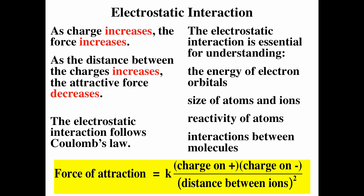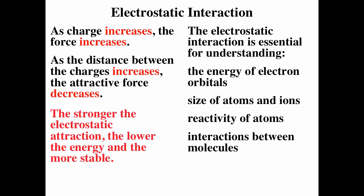The electrostatic interaction is essential for understanding the energy of electron orbitals, the size of atoms and ions, reactivity of atoms, and interactions between molecules. A lot of chemistry is just about the electrostatic interaction. The stronger the electrostatic attraction, the lower the energy, the more stable. Opposite charged particles attract; stronger attraction means lower energy and more stability. Stronger repulsion means higher energy and less stability.